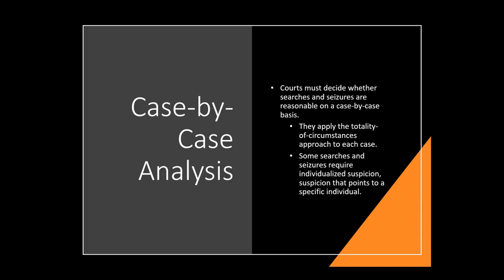This calls for a case-by-case analysis applying the totality of circumstances — tell us everything important about the case. What time of night was it? Where were they? How were they acting? Some searches require very individualized suspicion. The more innocent-looking on the surface, the more proof you're going to need; the more suspicious things were, the less proof you're going to need.